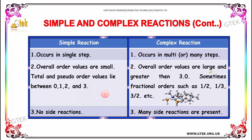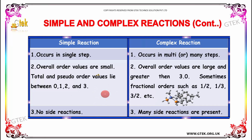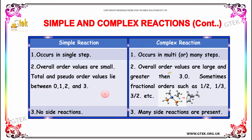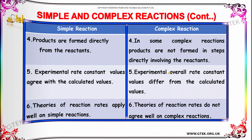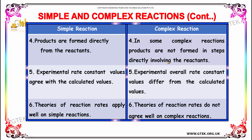For complex reactions, the overall order values are large and greater than 3.0. Sometimes a fractional order such as 1/2, 1/3, and 3/2 will occur. There is no side reaction in simple reactions, whereas in complex reactions many side reactions are present. In simple reactions, products are formed directly from the reactants.